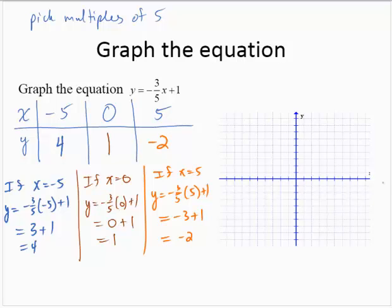Plotting those points. Again, let's assume a scale of 1 here. Negative 5, 1, 2, 3, 4, positive 4, 1, 2, 3, 4. 0, 1. 5, negative 2.